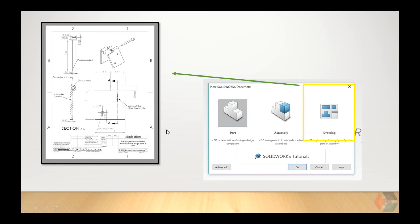Lastly, after we finish our project, we can use the drawing option to document our work. For instance, in this case, we would create a diagram showing how one would make a hinge with all the dimensions specified. So if someone wants to replicate your work, they simply need to look at this documentation to do it instead of asking you about it.